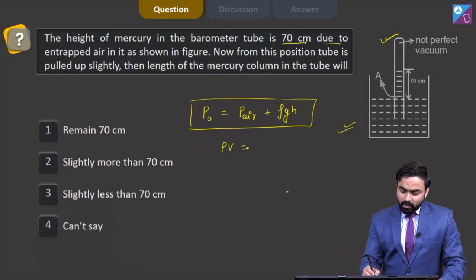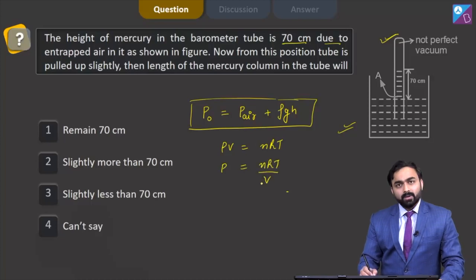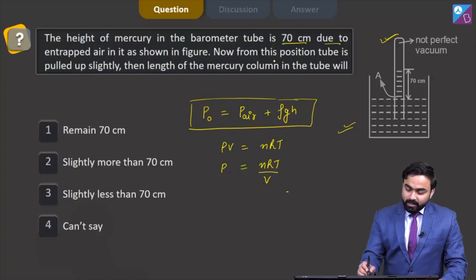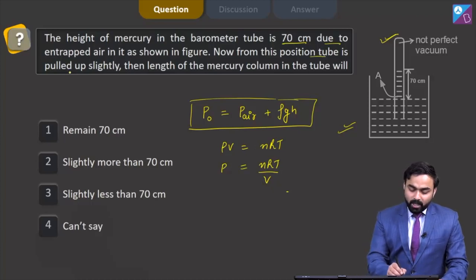that PV = nRT, and P I can write as nRT/V. Therefore, as this tube is pulled up slightly,